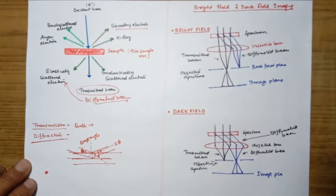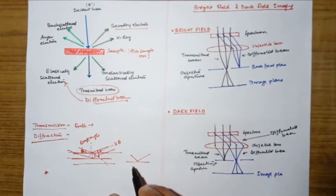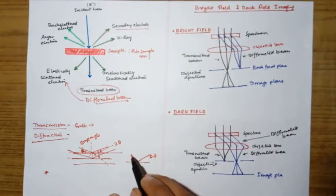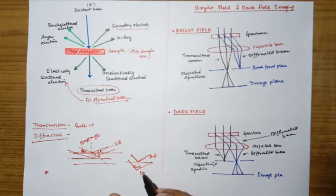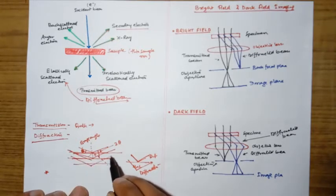The difference between reflection and diffraction: reflection always takes place from the top surface of the material. When the beam travels inside the material and gets reflected from the internal planes, that is called diffraction. So diffraction occurs from the bulk planes inside the material.